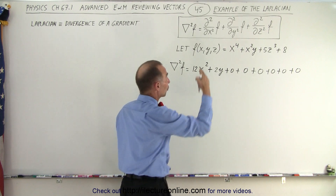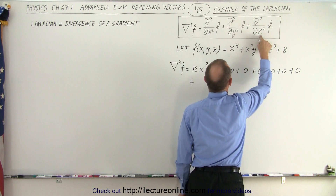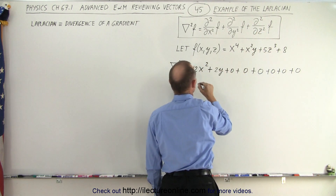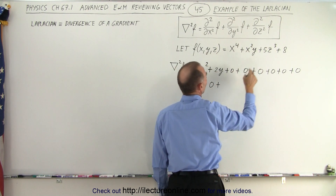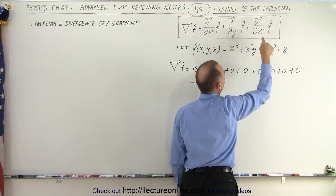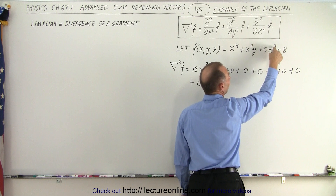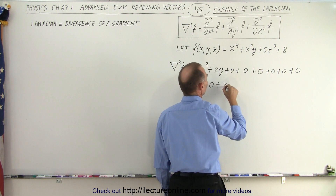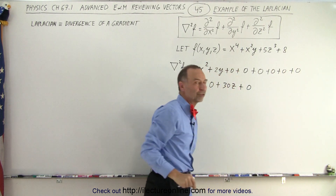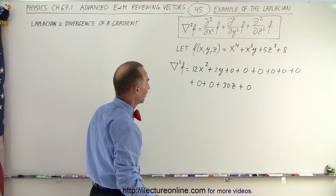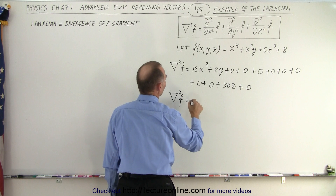Now we need four more terms for the third set — the second partial derivatives with respect to z. The first two terms contribute 0. For the 5z-cubed term, three times five is 15z squared, and then two times 15 gives 30z. The last term also contributes 0, so after discarding all the zeros we keep what we have left.